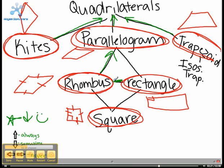Rhombus is always, that's right, always a quadrilateral. But a square is always a rhombus. But a rhombus is sometimes a square.